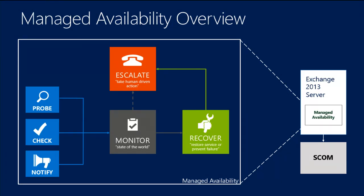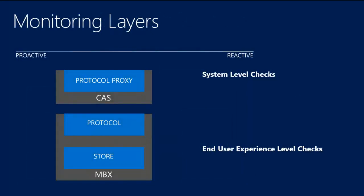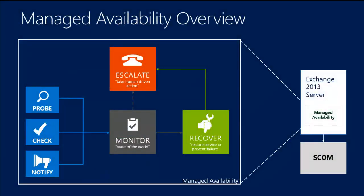When we escalate, we're reporting an alert that is picked up by SCOM so that SCOM can engage you to tell you there's a problem. If you don't have SCOM, then we won't be able to use the escalate to update SCOM. Instead, you'll have to use the cmdlets within the product that I'll talk about later — like Get-HealthReport — to see that there's a problem and to work on that.